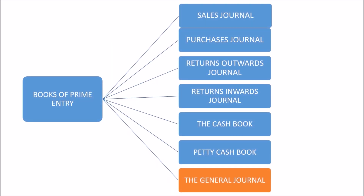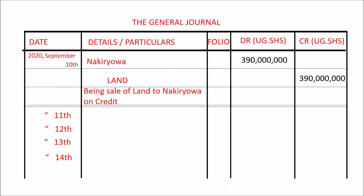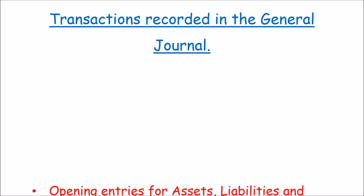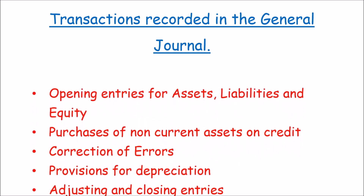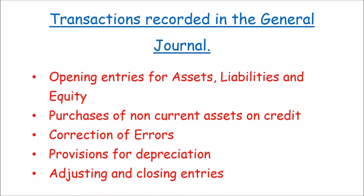Finally, we have the general journal. The general journal records items which are not recorded in the books above — these kinds of transactions are usually infrequent. They may include opening entries for assets, liabilities, and equity; purchases of non-current assets on credit; correction of errors; provision for depreciation; and adjusting and closing entries.